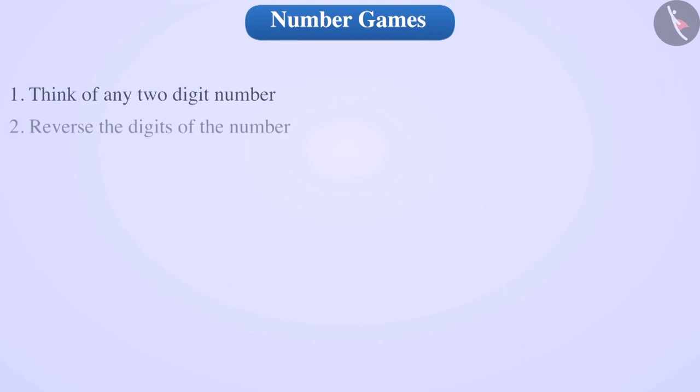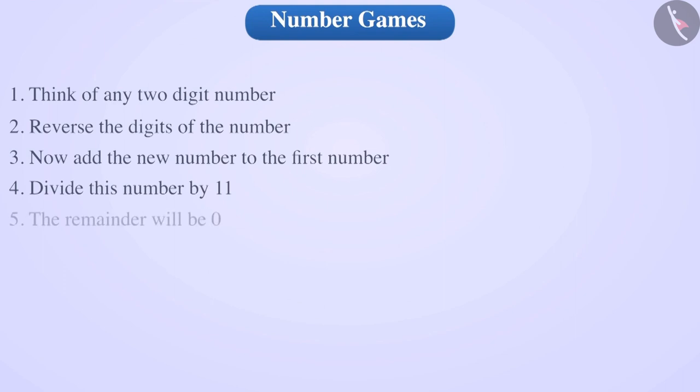Now, reverse the digits of this number. Add the new number to the first number. Divide the number so obtained by 11. Now, have you got a remainder 0?